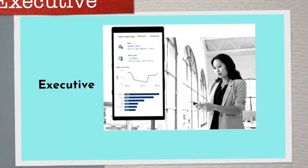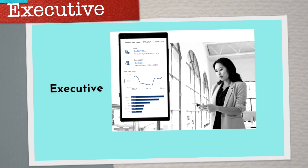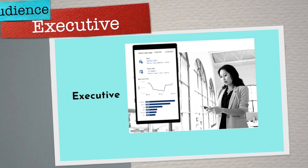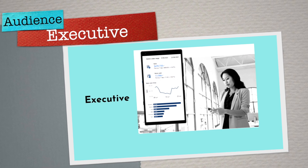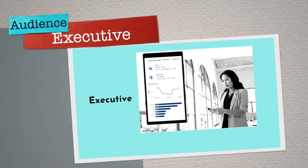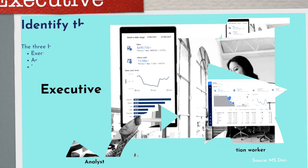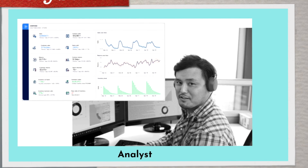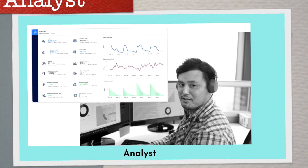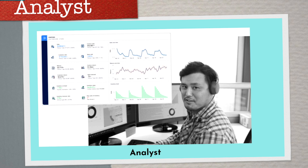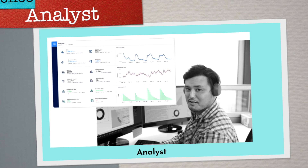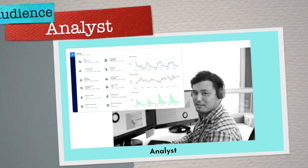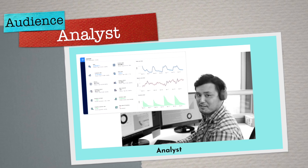An executive is a person charged with making plans and decisions that often involve a medium or long-term focus, and is responsible for making the business run smoothly. An analyst is a person who provides guidance to the organization and can be responsible for a range of tasks, often with goals of determining the effectiveness of business strategies, developing or improving processes, or implementing change.